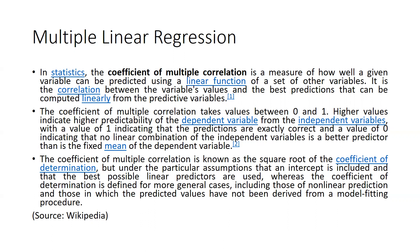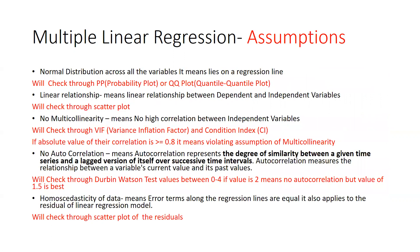A higher value indicates higher predictability of the dependent variable from the independent variables, with a value of 1 indicating that the predictions are exactly correct. A value of 0 indicates that there is no linear combination of the independent variables that is a better predictor than the fixed mean of the dependent variable. These assumptions are very important before we apply multiple regression.